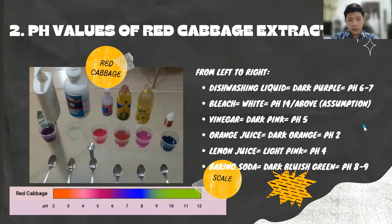Next, the red cabbage extracts — here are the pH values from left to right. For the dishwashing liquid, the color turned dark purple. Based on the scale, it has a pH value of 6 to 7, which is almost neutral.